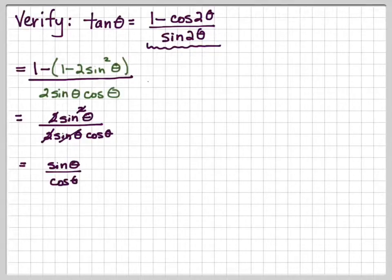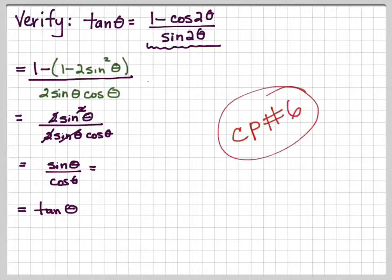The 2's cancel, the sin² and sin cancel, so we wind up with sin θ over cos θ, which is tan θ. Now go do your checkpoint number 6.